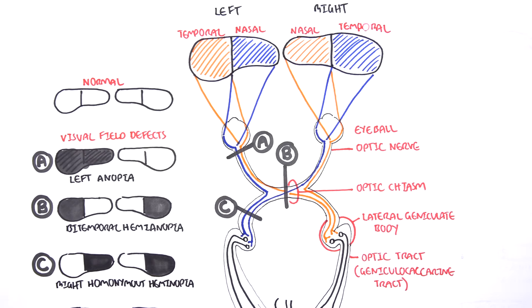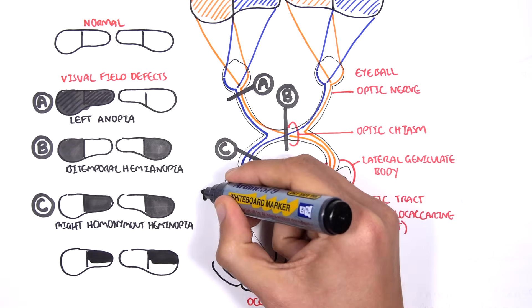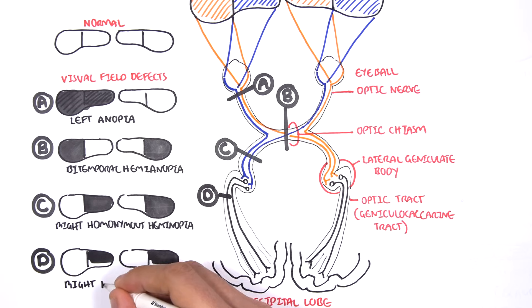And lastly, D. If a lesion occurs on one of these nerve tract, the nerve tract bundles, it will cause what is called right homonymous superior quadrantanopia.